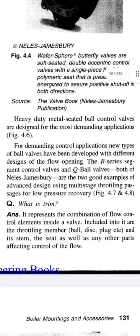What is a trim? Answer: It represents the combination of flow control elements inside the valve. Included in it are the throttling member — ball, disc, plug, etc. — and its stem, the seats, as well as any other parts affecting control of the flow.